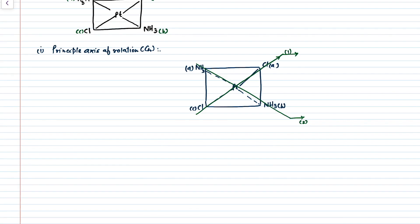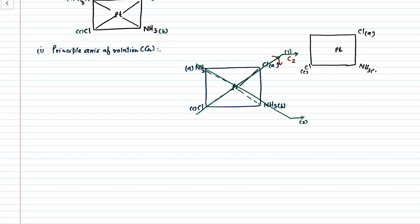Do the C2 symmetry operation about axis number one and rotate this molecule 180 degrees in this direction. The position of chlorine A and chlorine C will not change, but the positions of the two diagonal ammonia molecules will interchange — NH3 A becomes B and NH3 B becomes A. When we compare structure 2 with structure 1, we find they are equivalent. So C2 is a symmetry element of this molecule.